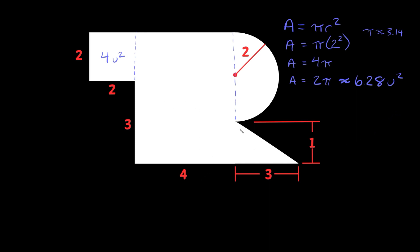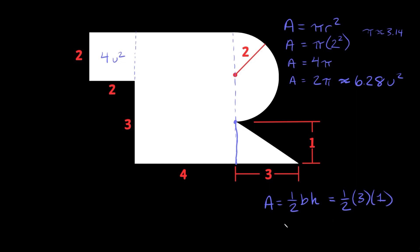Here we have this sharp corner, so it looks like a triangle. If I extend that line, it tells us the dimension from this line to the corner is 3 units, and the height from here up to here is 1 unit. We know the area of a triangle is one-half the base times the height. So the area is one-half times 3 times 1, and half of 3 is 1.5. So the area of this triangle is 1.5 units squared.